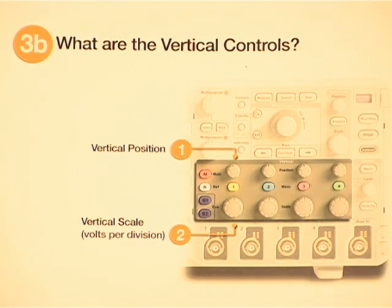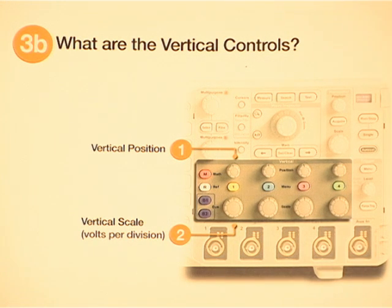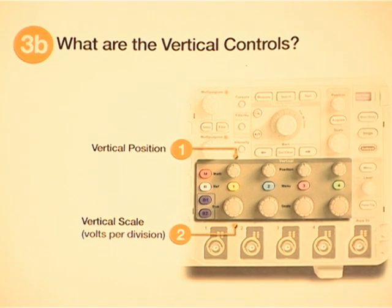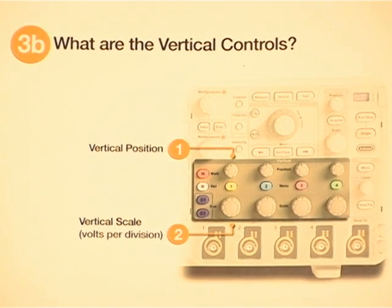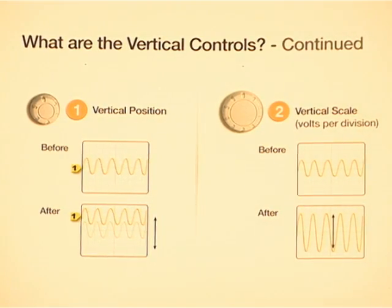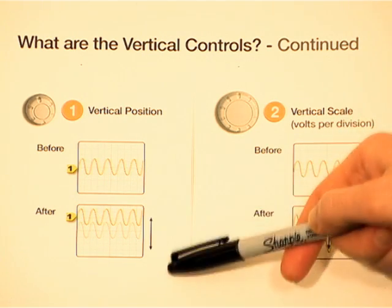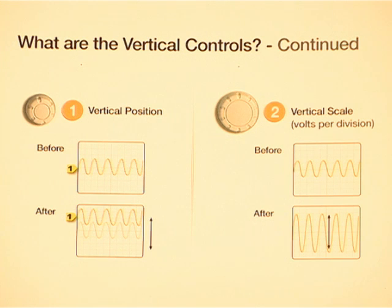So this particular scope can display up to four analog channels from different inputs. And each channel has its own independent set of vertical controls. That means each waveform can be positioned independently of the others on the screen. And the two most important vertical controls are the vertical position and the vertical scale. So the vertical position moves the waveform up and down the screen. And the vertical scale expands or compresses the waveform vertically.